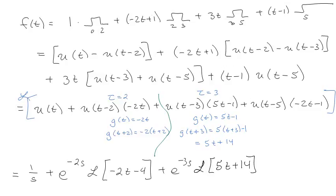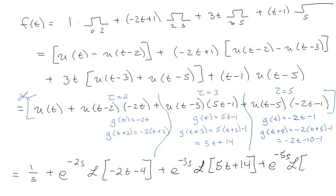So g of t plus 5 is negative 2 times t plus 5 minus 1, so g of t plus 5 is negative 2t minus 11. So I've got plus e to the minus 5s times the Laplace of negative 2t minus 11. You can see all of that.